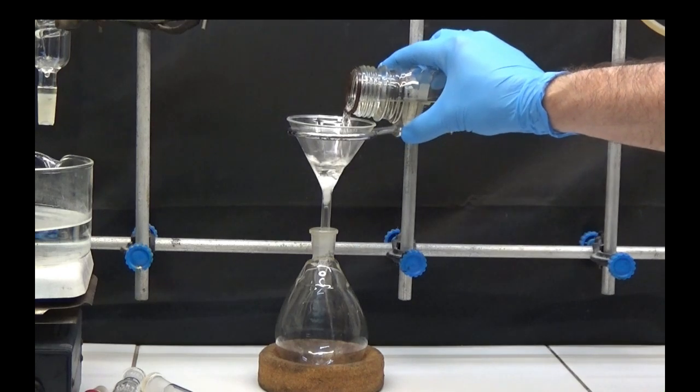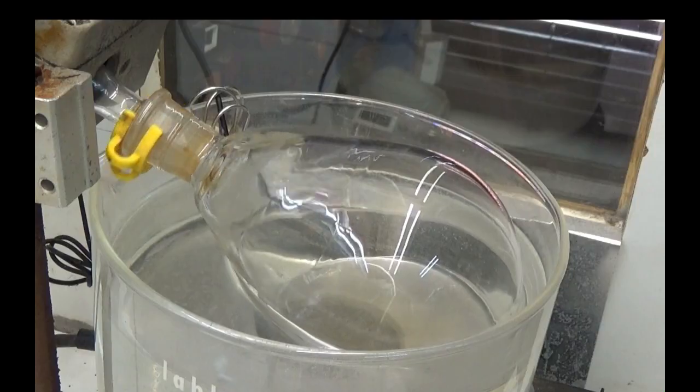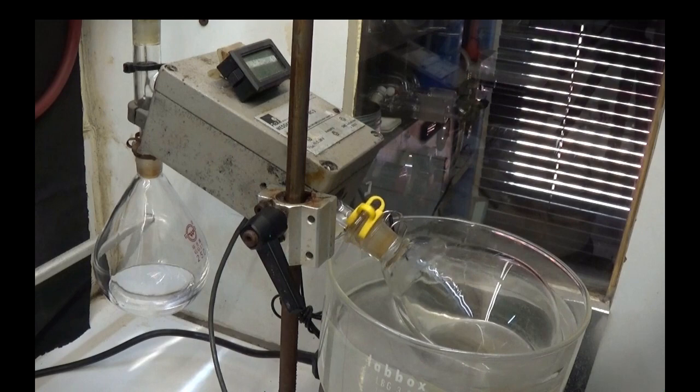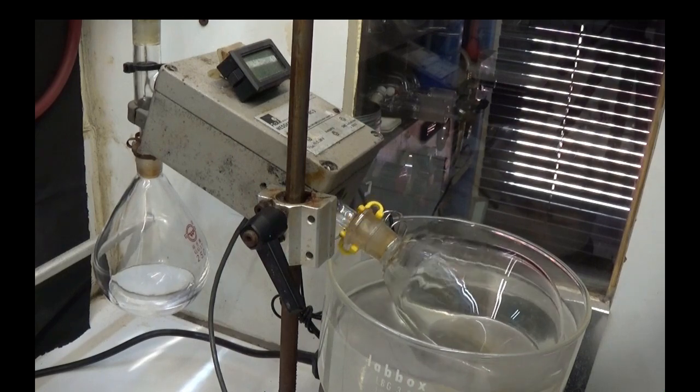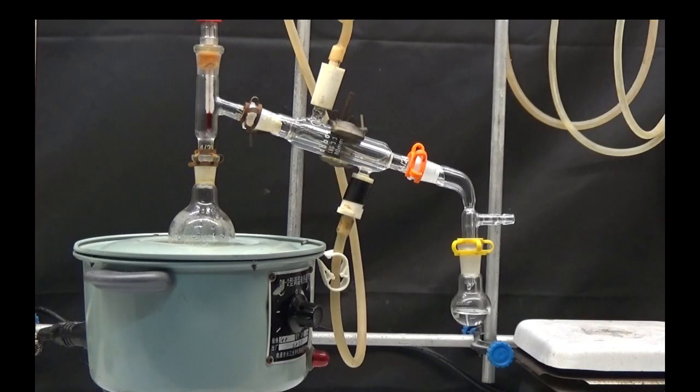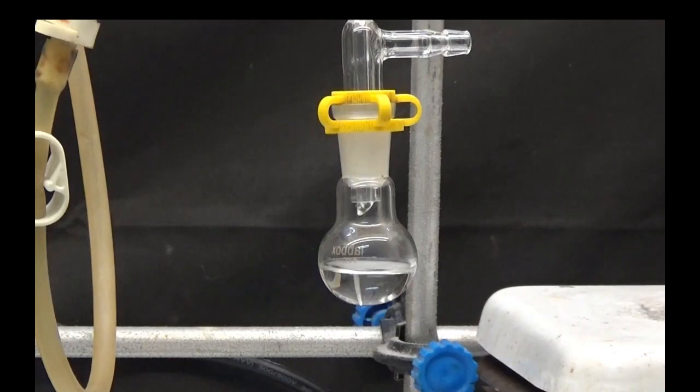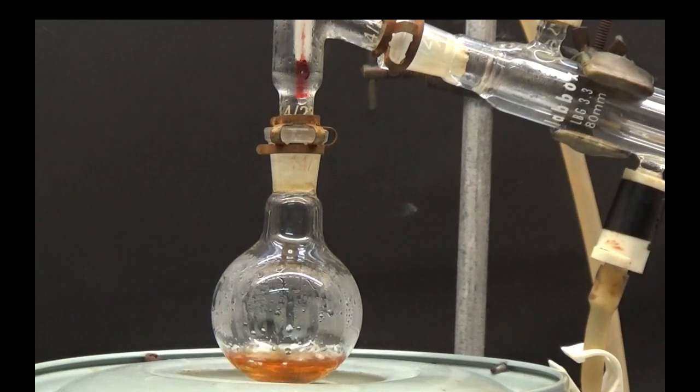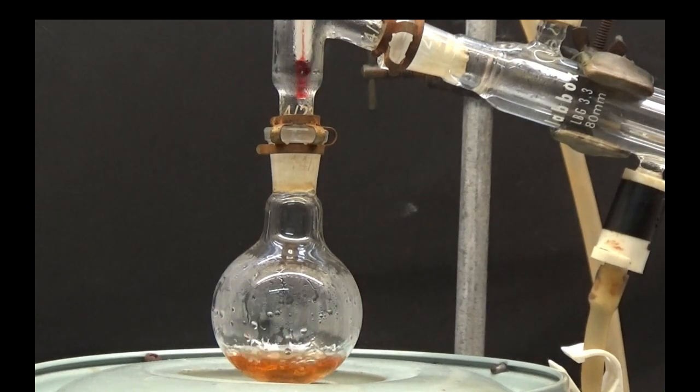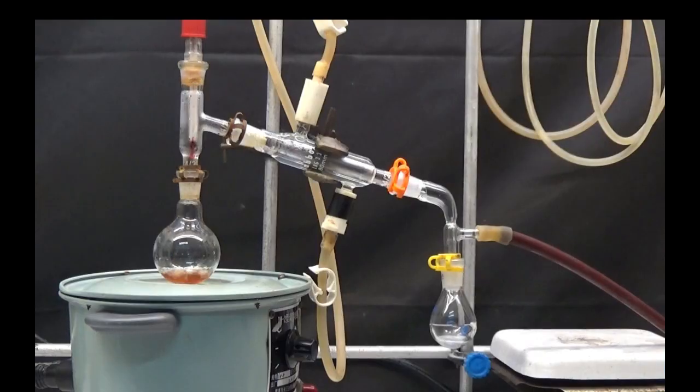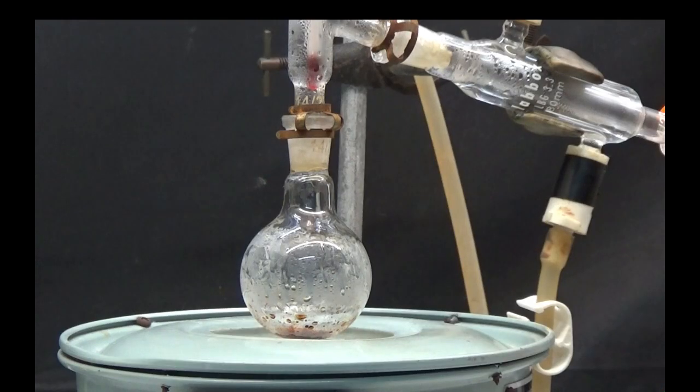Filter and evaporate the ether. Distill the resulting product. In the distillation, we will allow the temperature of the steam to increase to 150 degrees. Connect the vacuum and continue the distillation.